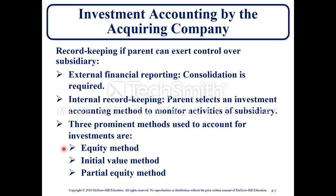For record keeping: if a parent can exert control over the subsidiary, external financial reporting consolidation is required. Internally, a parent selects an investment account method to monitor activities of the subsidiary. The three most prominent methods used to account for investments are the equity method, the initial value method, and the partial equity method.